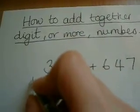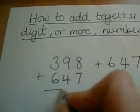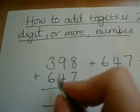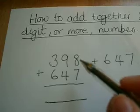I'm going to add the 647 directly below the 398. Units below the units, tens below the tens, and hundreds below the hundreds. Then I'm simply going to add them together.